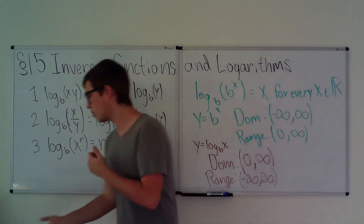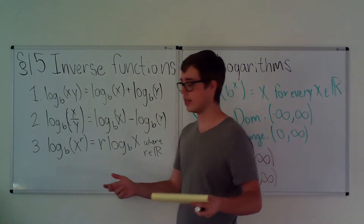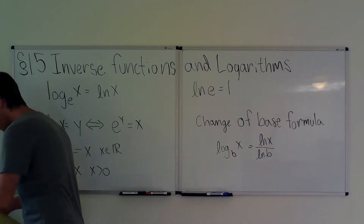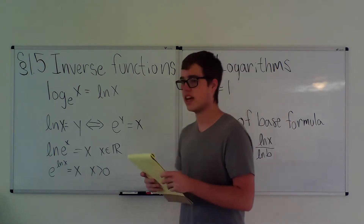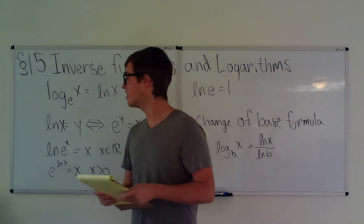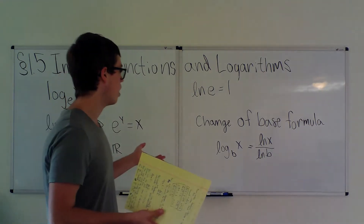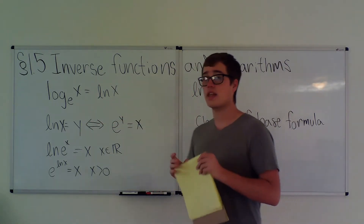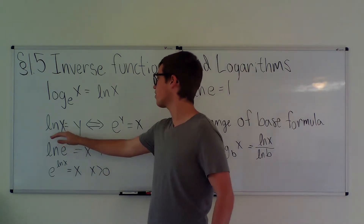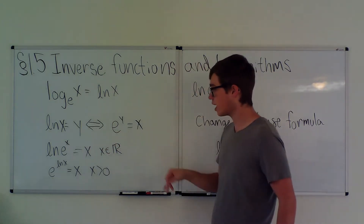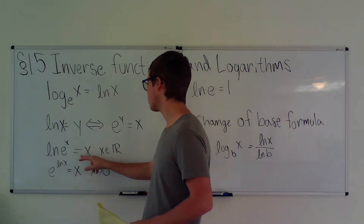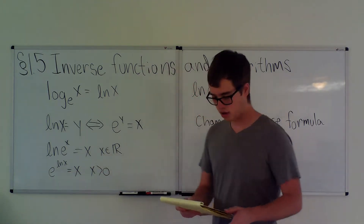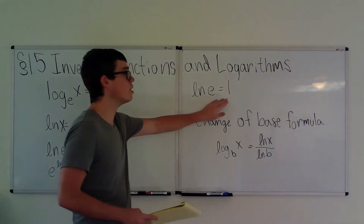Now moving on to natural logs. Here comes the letter e again. log_e(x) = ln(x), the natural log of x. So ln(x) = y if and only if e^y = x. Also: ln(eˣ) = x for x in ℝ, and e^(ln x) = x when x > 0. And ln(e) = 1.